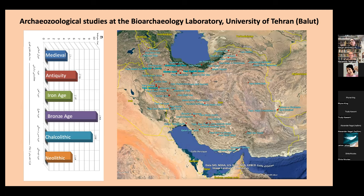You can see a map with all the site names and a graph showing the distribution of these sites and the information we have for different periods of time. We can cover basically all the periods of Iranian history during the Holocene through the work done over the last 11 years with this group at the bioarchaeology lab — which I will call Balut from now on.